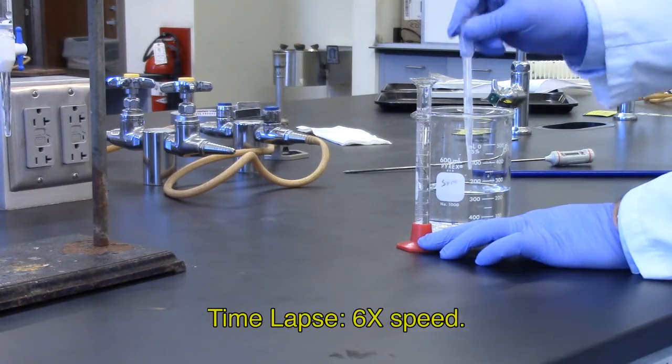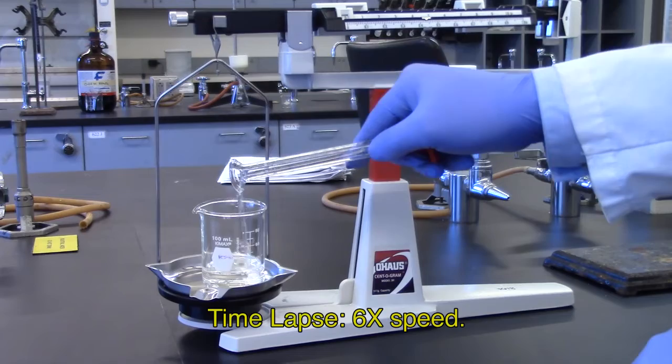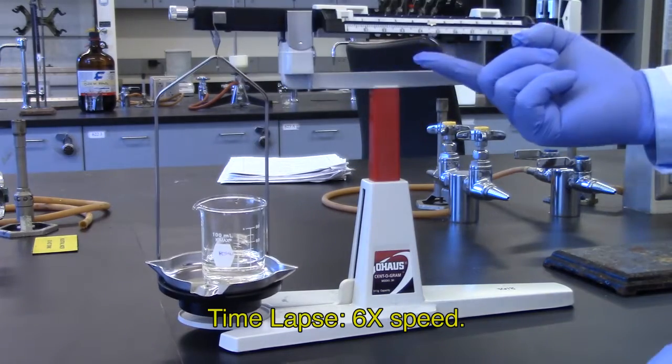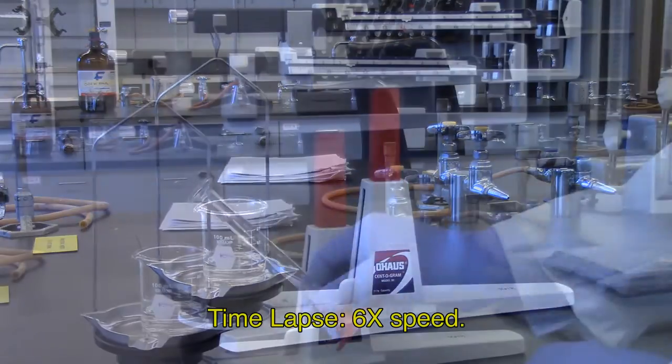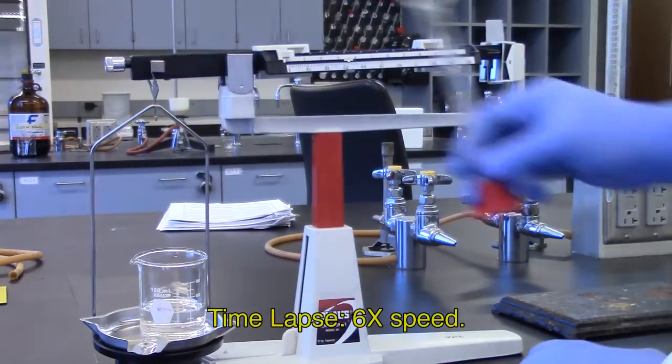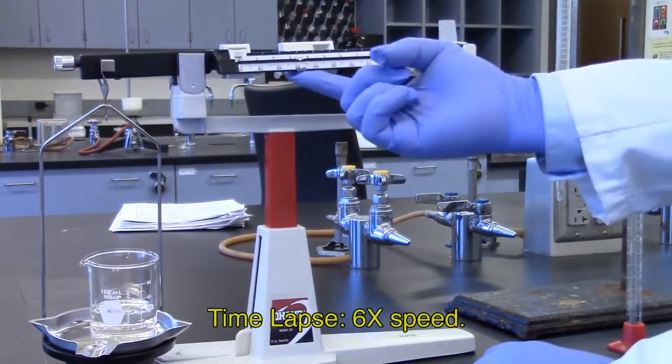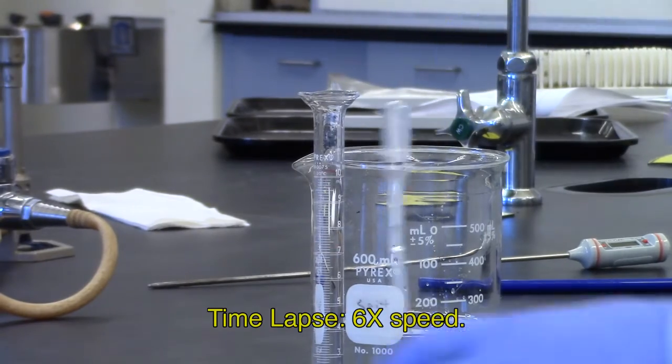Repeat four more times, measuring out 10 milliliters of water with the 10 milliliter graduated cylinder and transferring to the 100 milliliter beaker and weighing after each 10 milliliter aliquot addition.